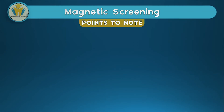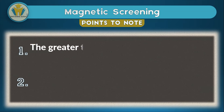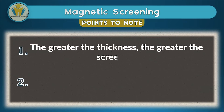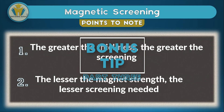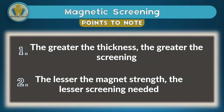There are two key points under magnetic screening. First, the greater the thickness of the magnetic material used for screening, the greater the effect of the screening — increased thickness causes more field lines to pass through the material, making the screening more effective. Second, the lesser the magnetic strength of the magnets involved, the lesser the need for screening. With small magnetic strength, even materials without very high magnetic permeability can be used for screening. Note these two points as they are very helpful.